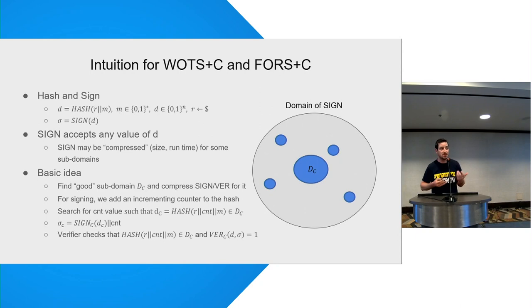So what we can actually do is we're going to tweak the hash and sign algorithm slightly, and we're going to add a counter. And what we're going to do is we're going to try different values for this counter until our digest falls inside this cool and optimized subdomain that we are able to find. And then we're going to sign it with an optimized scheme that was optimized for this specific subdomain.